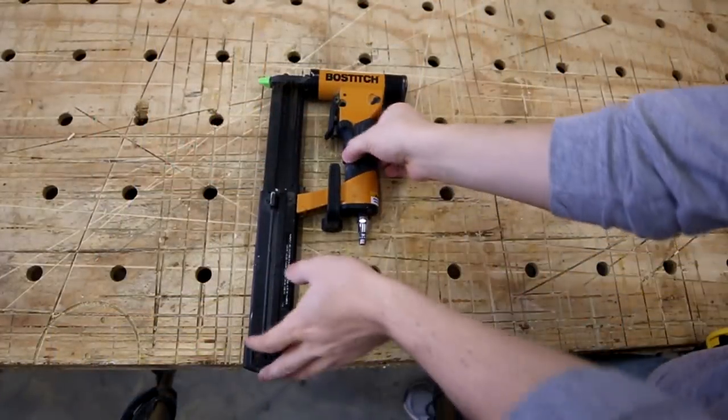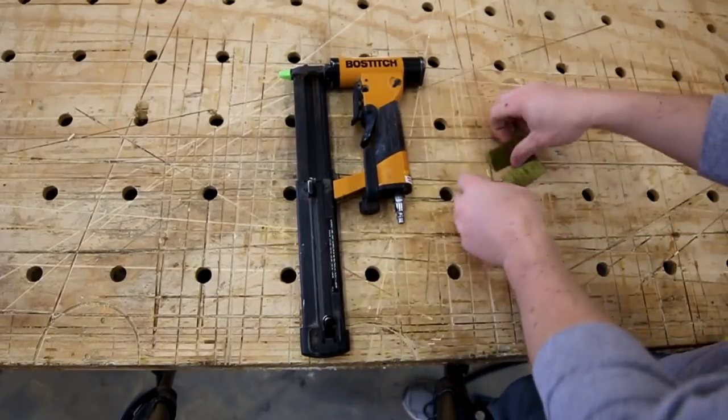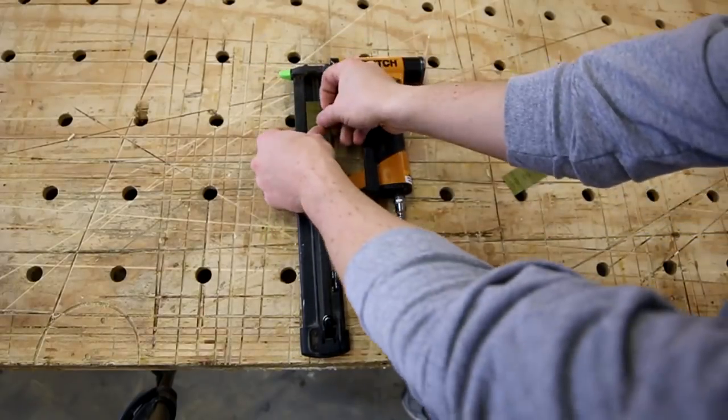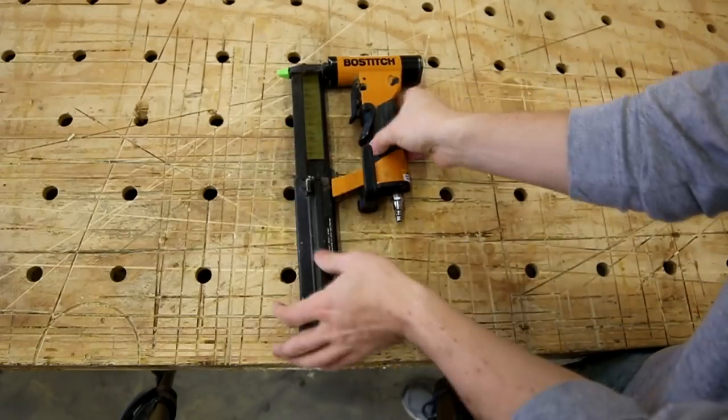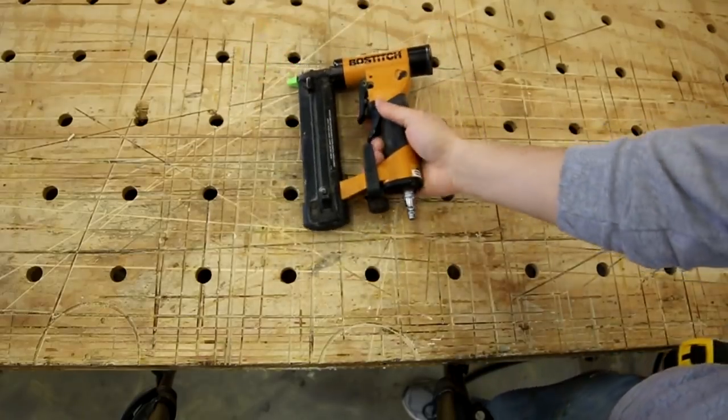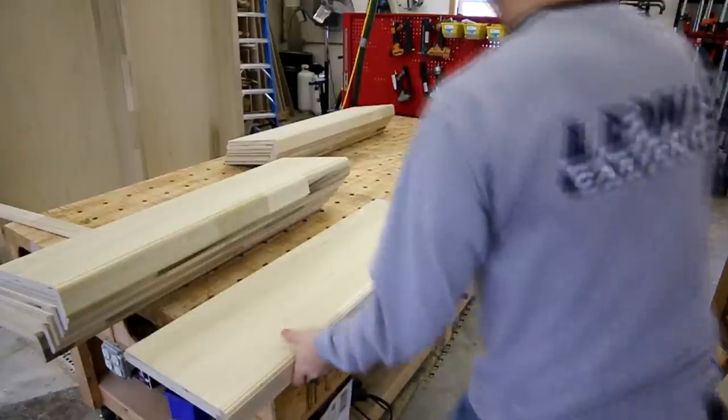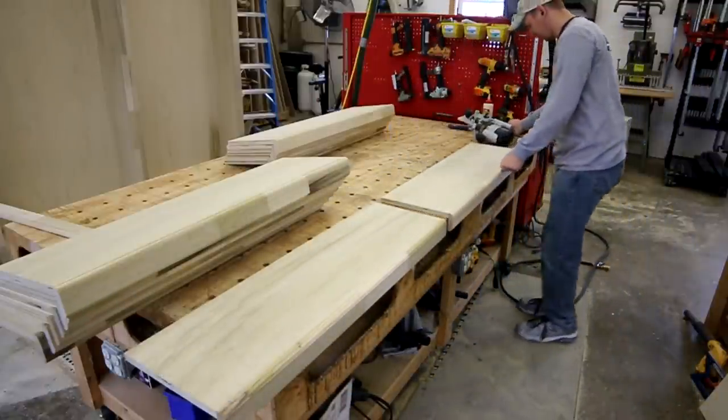Before we move on I want to plug the Bostitch 23 gauge pin nailer. It's my favorite pin nailer because I can put two sticks of pins in the gun which goes a much longer time whereas most pinners only allow you to put one stick in at a time.